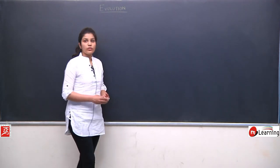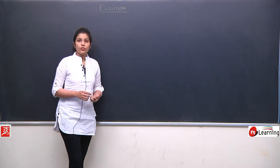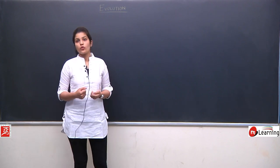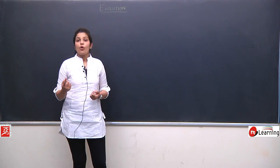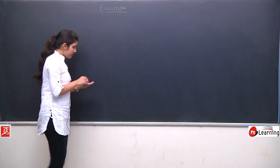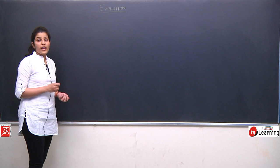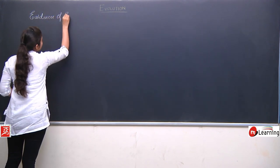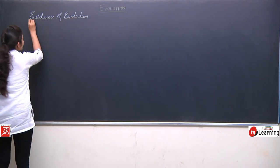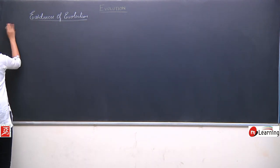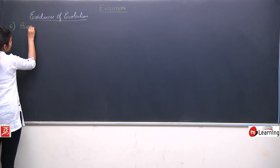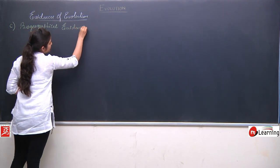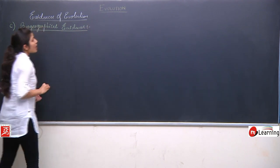In the previous lecture, we studied about the evidences of evolution. In the previous class, we covered two classes of evidences: paleontological evidences and morphological and anatomical evidences. Today we will discuss the third class of the evidences of evolution — biogeographical evidences.